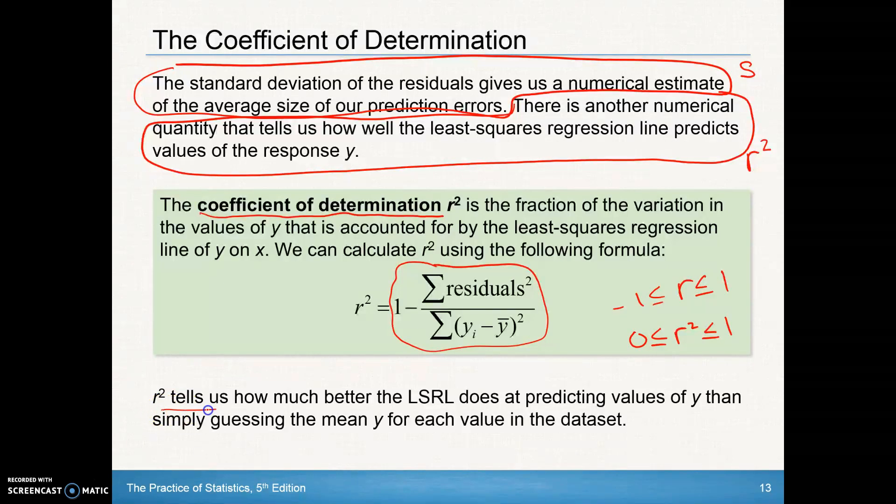The r-squared value tells us how much better the LSRL, the least squares regression line, does at predicting values of y than simply just guessing the mean y for each value in the data set. I like to think of it as the percent of the data that follows the regression line quite well.